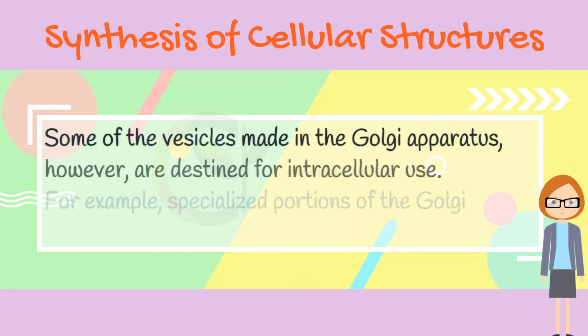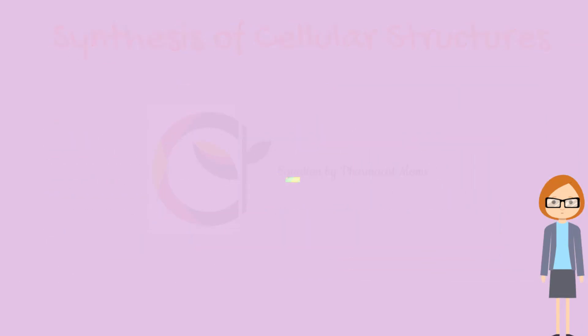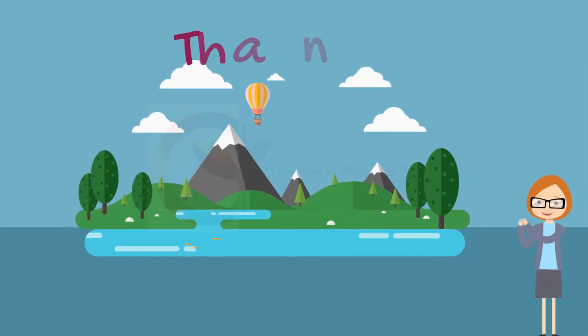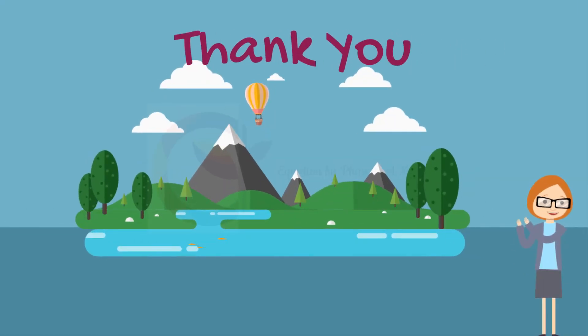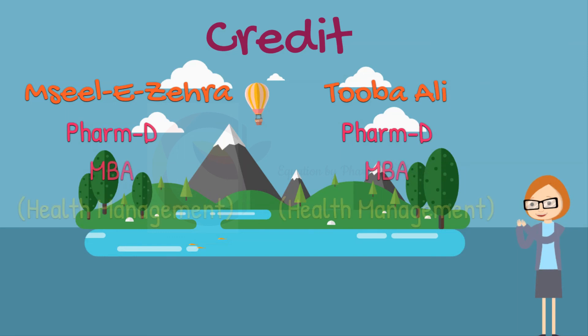Some of the vesicles made in the Golgi apparatus, however, are destined for intracellular use. For example, specialized portions of the Golgi apparatus form lysosomes. Here we reach the end of part 1 of our discussion. We'll continue our discussion in the next video. Thank you.